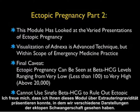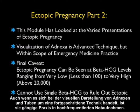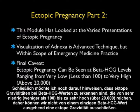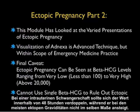In conclusion, this module covered the varied presentations of ectopic pregnancy. Hopefully you now better understand what we're searching for on bedside sonography when working up a patient with possible ectopic pregnancy. While visualization of the adnexa and fallopian tubes is an advanced technique, it is well within the scope of a busy emergency medicine practice. As a final caveat, ectopic pregnancies can be seen at beta-HCG levels ranging from very low, less than 100, to very high, above 20,000 — thus we cannot use a single beta-HCG level to rule out ectopic pregnancy. It's better to look at trends in this hormone level over time: with an intrauterine pregnancy the level should double in 48 hours, whereas in most ectopic pregnancies it will not climb to the same degree.